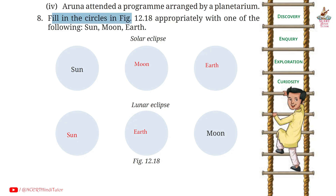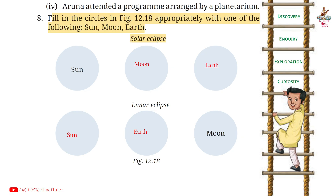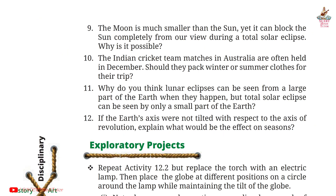Question 8. Fill in the circles in Figure 12.18 approximately with one of the following: Sun, Moon, Earth. Solar eclipse: the Moon comes in between the Sun and the Earth, so the order is Sun, then Moon, then Earth. In a lunar eclipse, the Earth comes in between the Sun and the Moon, so in the middle we have Earth, left is Sun, right is Moon.